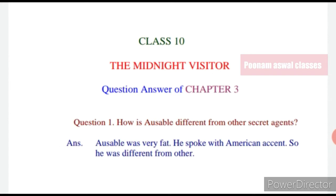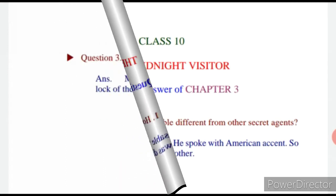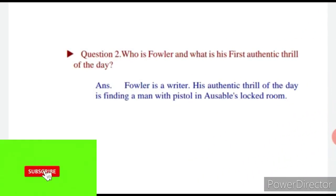First question: How is Ausable different from other secret agents? Answer: Ausable was very fat and he spoke with an American accent, so he was different from other agents. Ausable dekhne mein bahut zyada mota tha aur uska American accent tha, isliye wo doosre agents se different tha.